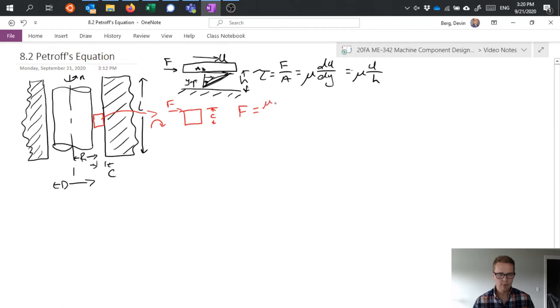A u over c. So c is replaced h, I'm using this side of this equation here, not using tau but substituting in the equivalent values.